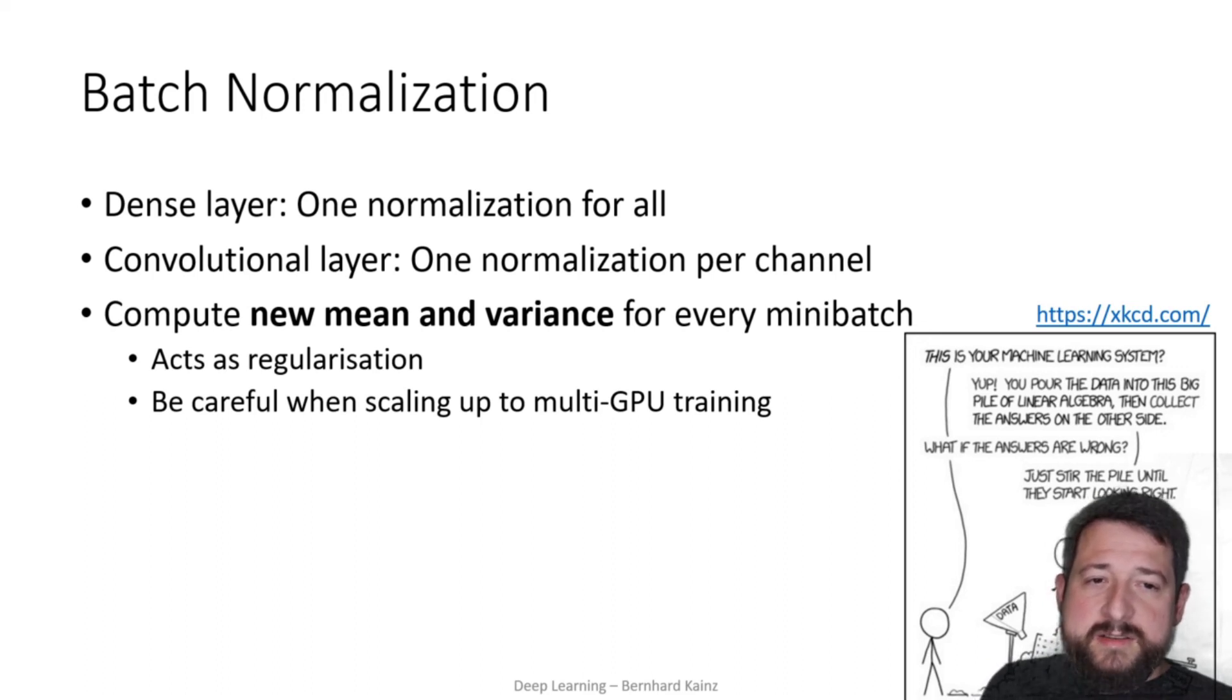So if you have a dense layer, then you just use normalization for all the activations. And if you have a convolutional layer, then you use batch norm per channel. Okay. So for every mini batch, a batch norm layer computes a new mean and variance during training.